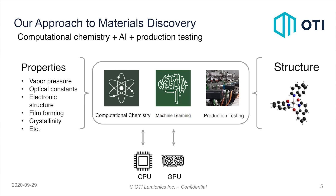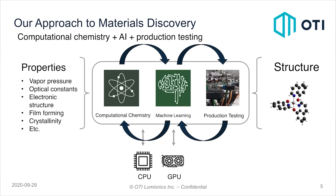Right now we do all of this on our high-performance computing cluster in-house using CPUs and GPUs. One thing that makes our approach unique is that we're able to transfer information between production testing, machine learning, and computational chemistry. But one thing we've been exploring in collaboration with D-Wave is whether we can use quantum computers to do some of these calculations, and what the particular benefits would be — even if there is a potential speed-up, is that speed-up enough to offset the cost?